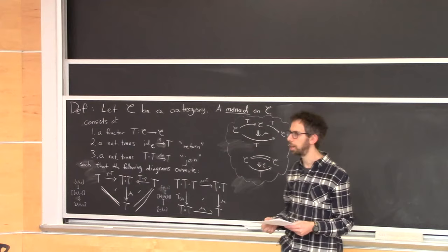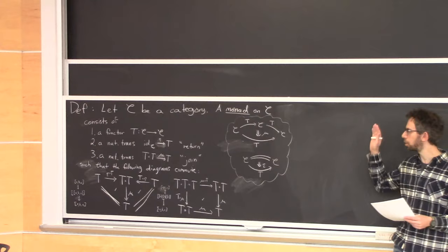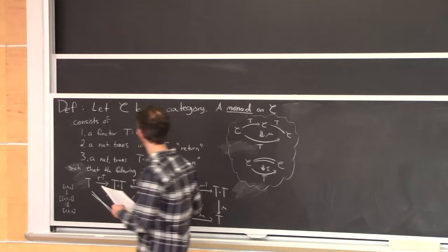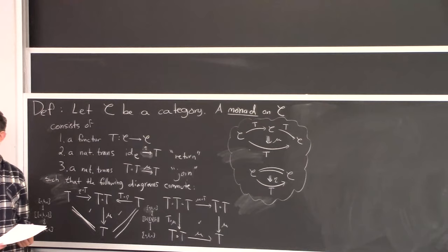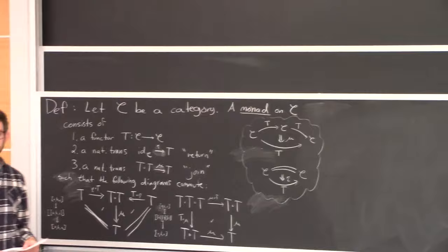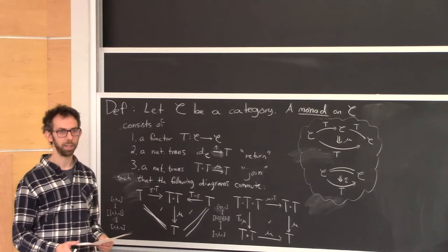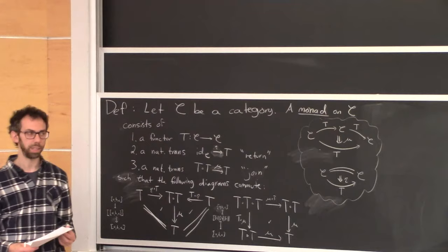So last time we talked about monads on categories, and today we'll do a whole bunch of examples throughout the day and talk about the Kleisli category of a monad. We'll be talking about the category of sets today, and Bartosz tomorrow will talk about monads in Haskell. When people use monads in Haskell and use things like do notation, they are working in the Kleisli category of a monad.